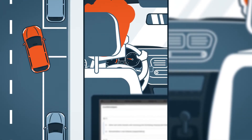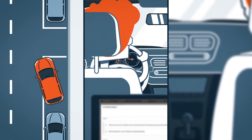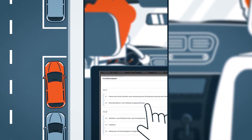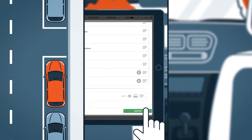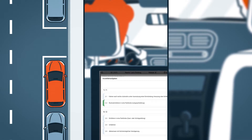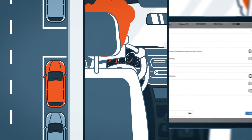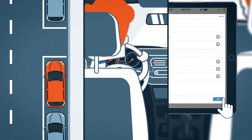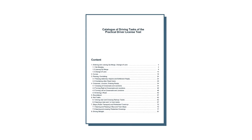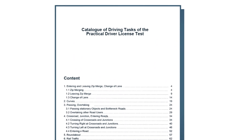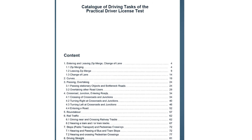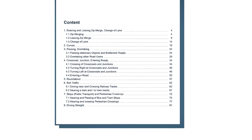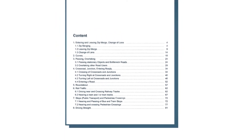During the test drive, the candidate must fulfill certain requirements. He is observed by the examiner and his skills are evaluated and documented. Finally, the examiner makes his decision as to whether the candidate has sufficient driving skills or not. The requirements for the test drive and the evaluation criteria are described in the catalogue of driving tasks. Driving tasks and areas of driving competence, also referred to as observation categories, are defined here.